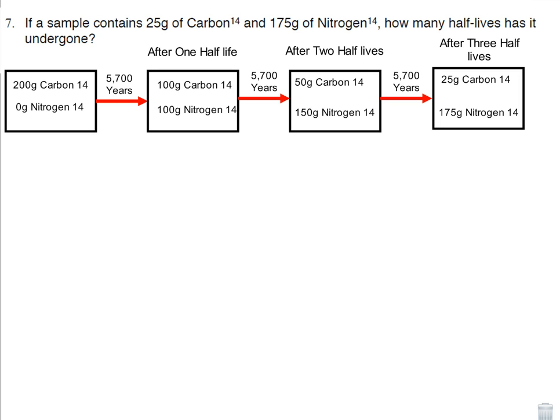Another 5,700 years, I get 25 grams of carbon-14, 175 grams of nitrogen-14. And lo and behold, I know that my answer would be three half-lives for that one. You're always better off just writing out diagrams. They never ask you beyond five half-lives. Typically it's three to four half-lives. So you could very easily diagram this stuff out rather than trying to figure it out mathematically.